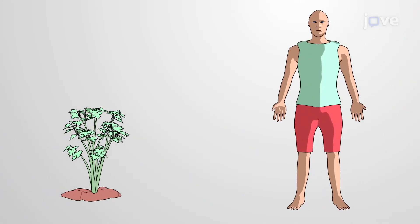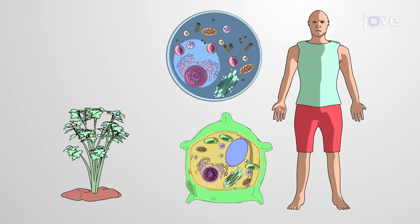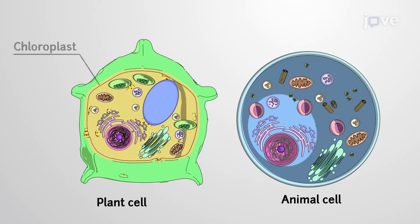Moreover, eukaryotic organisms, such as plants and animals, can vary in their exact cellular makeup. For example, a typical plant cell contains chloroplasts, while animal cells do not.